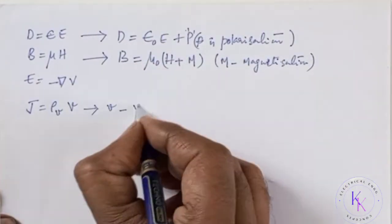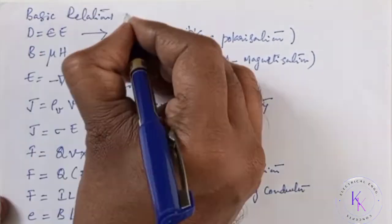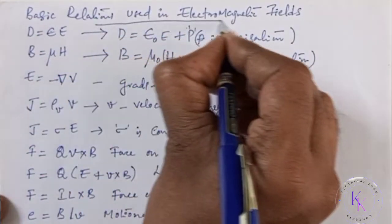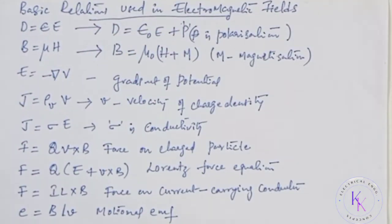Up to now, in previous videos, we studied basic relations which are applicable to static electromagnetic fields. These are all the basic relations used in static electromagnetic fields. Later on we came to know that a time-varying electric field produces a magnetic field, and a time-varying magnetic field produces an electric field — which is nothing but time-varying fields.